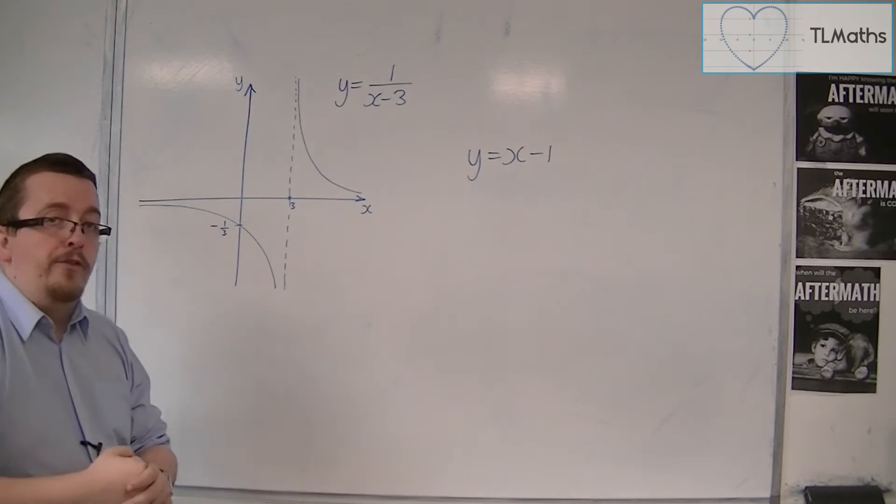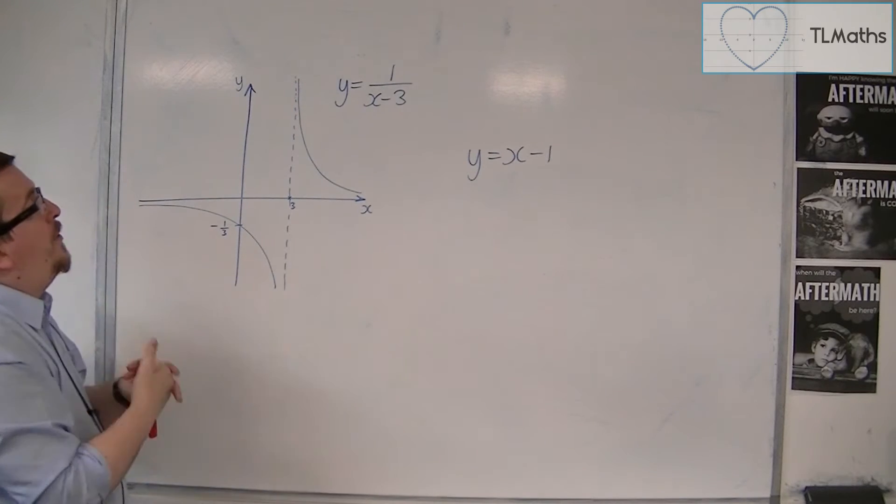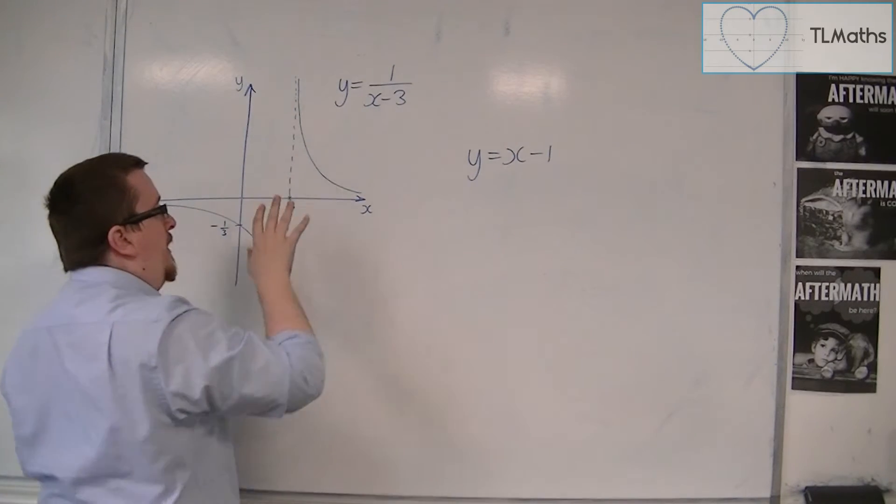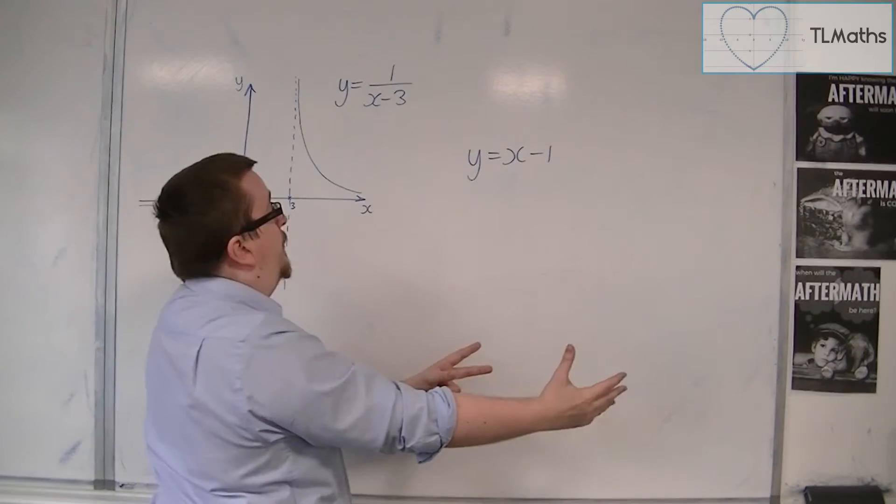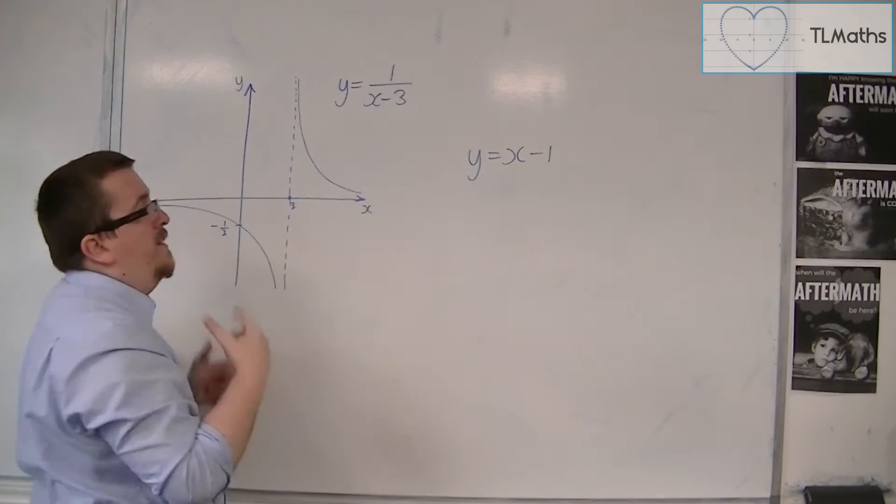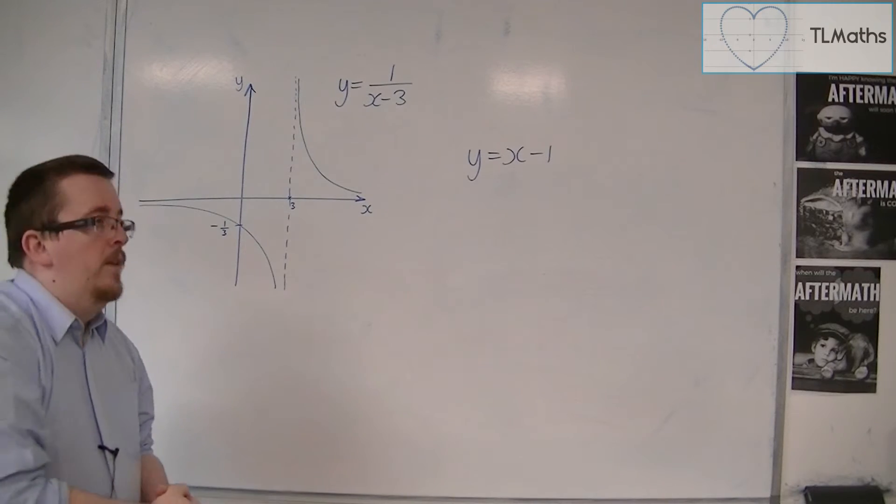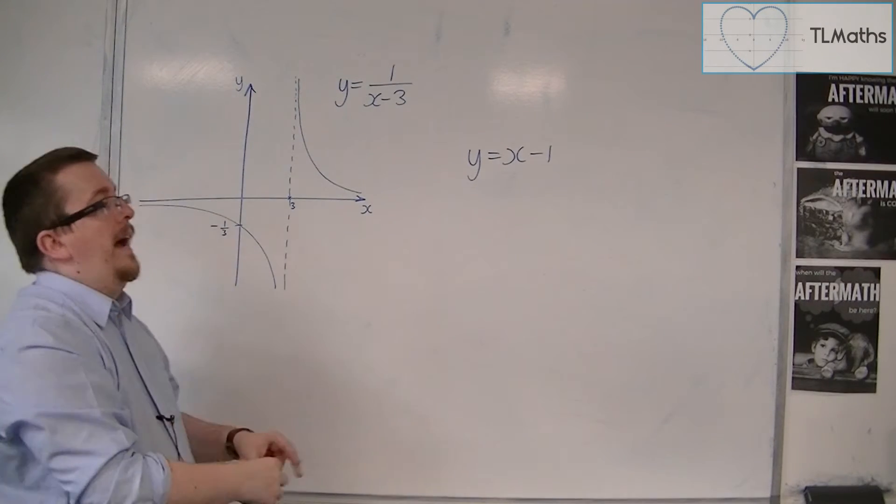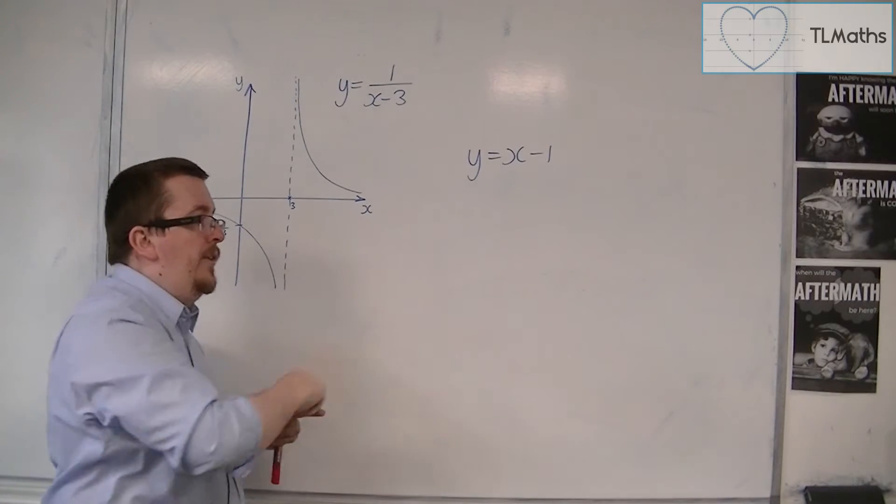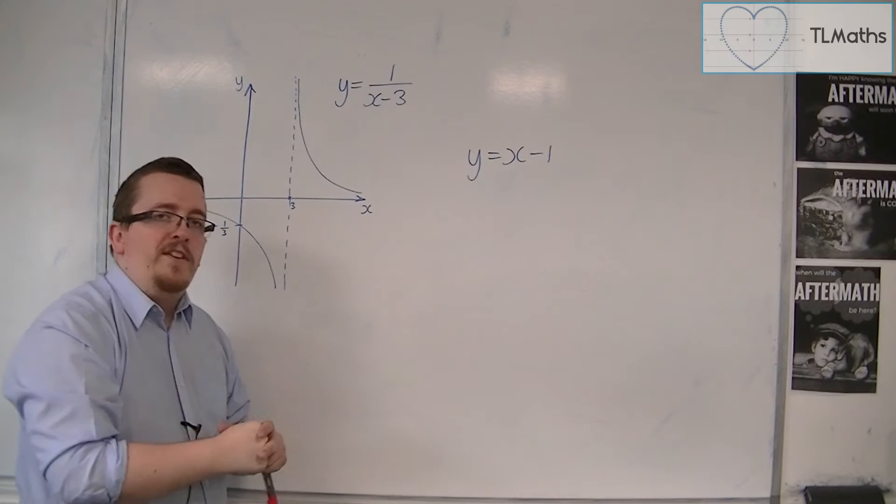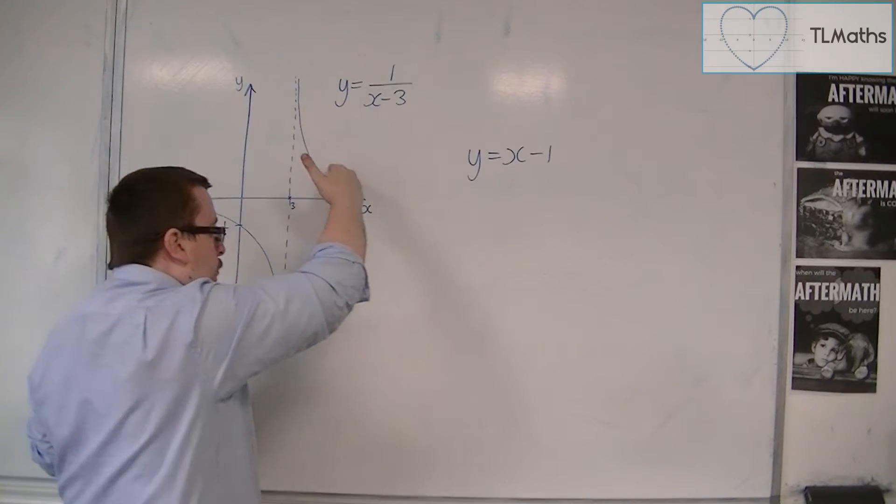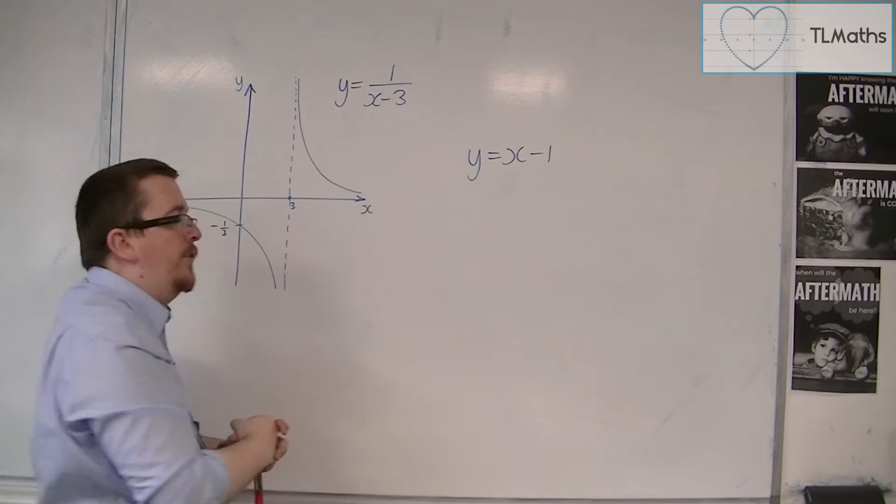Now you'll also see that the curve approaches the x-axis from both directions. That's because as x increases, so if you think of like x equals 1,000, then you've got 1 over 997, which is very, very small. And the larger x gets, the larger the denominator gets, and so the closer this gets to 0. And so that is why the curve is approaching the x-axis in that way.